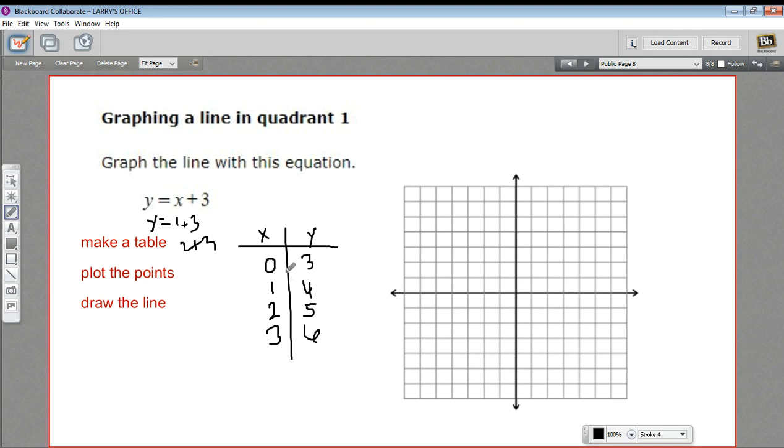So let's say we can plot these. Here's our x-axis, and we want 0 on the x, so that'd be right there, and 3 on the y. 1, 2, 3. So that's the point 0, 3.